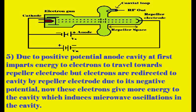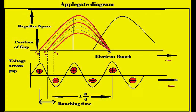These high-energy electrons — whose energy was increased due to the acceleration — when they reach the cavity for the second time, oscillations are induced in the cavity. This is how microwave oscillations are generated in the reflex klystron oscillator.